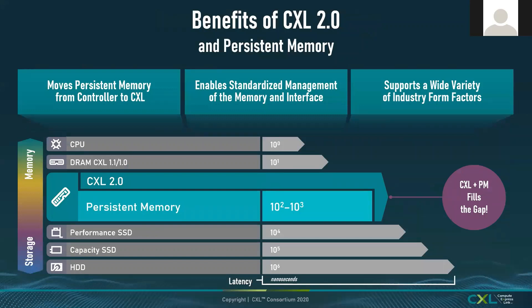CXL provides low latency, high bandwidth transport for devices such as DRAM, as well as higher-latency devices like storage. CXL 2.0 also adds specific support for persistent memory — memory that looks like a storage element but operates with load/store semantics at much lower latency, in tens or hundreds of nanoseconds rather than microseconds. The concept of global persistent flush was introduced so individual root ports or hosts can command cycles to be flushed all the way to persistent store.